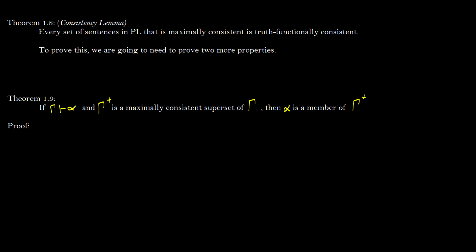Welcome to video four of the completeness proof in propositional logic. In this video we're going to be using some things that we've proven in the past three videos. If you need this for a course or you're just tuning in and you don't know the stuff in the previous videos, check the previous three videos because it'll be in there. We're talking about the consistency lemma: every set of sentences that is maximally consistent is going to be semantically consistent or truth functionally consistent. But we can't quite prove this yet — we're going to prove theorem 1.8 in the next video. Instead we have to prove some sub-proofs that help prove the consistency lemma.